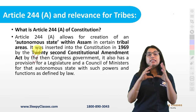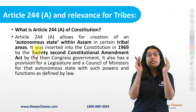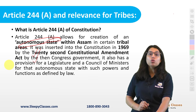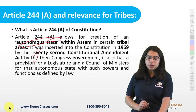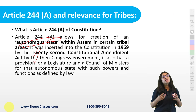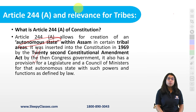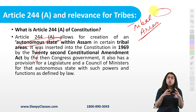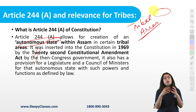So what does Article 244A provide? It provides that within the northeastern state of Assam, you can create an autonomous state. What does autonomous state mean? It means that if there is a large state, certain regions of it — because of the peculiarities of those regions, maybe because of the prevalence of tribal population, their indigenous customs, and their livelihoods — can be made an autonomous state within a state, which will have autonomy, freedom, and powers to make decisions in certain areas.